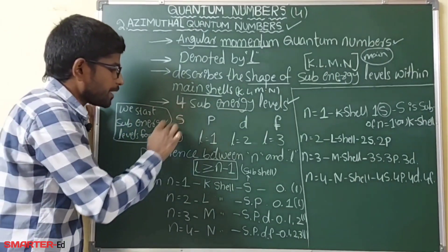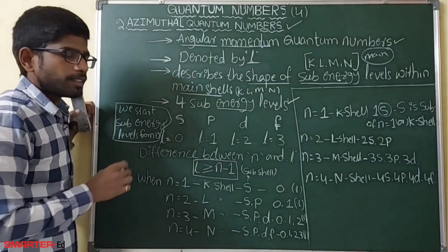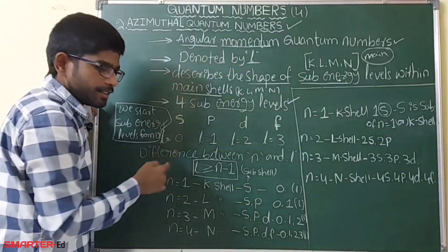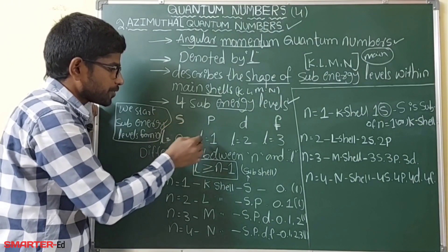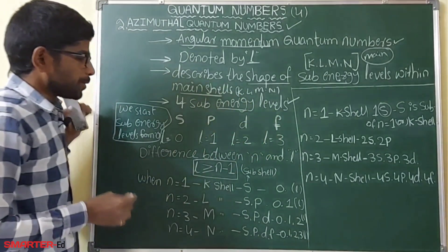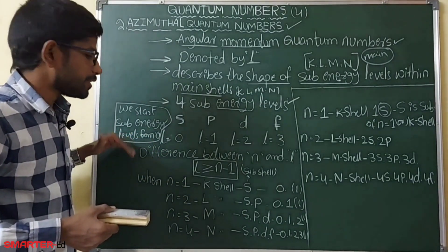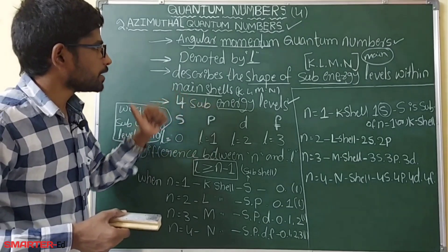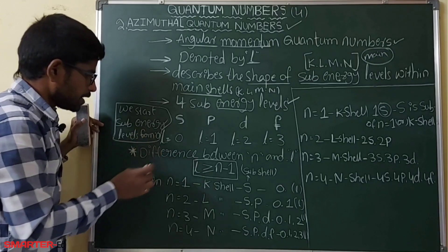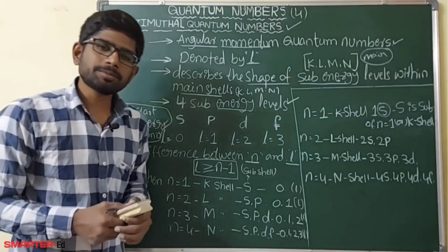The sub-energy levels are denoted by l. They start from 0. So l equals 0 for the s sub-shell, l equals 1 for p, l equals 2 for d, and l equals 3 for f. This is about the azimuthal quantum number.